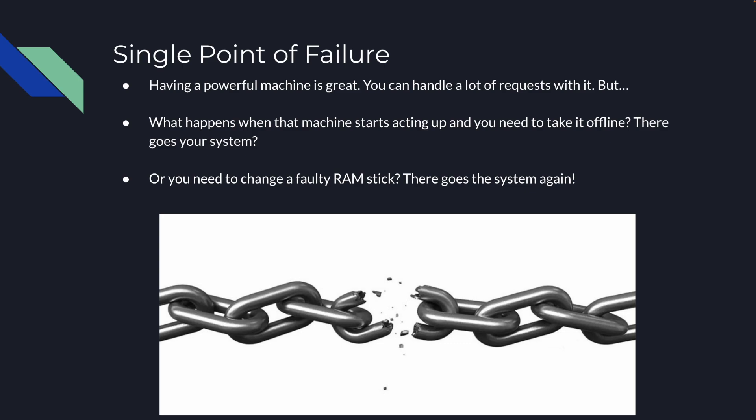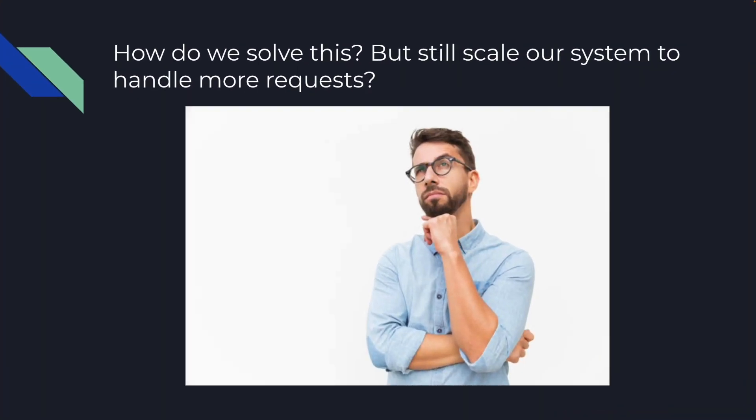Another issue with vertical scaling is that you have a single point of failure. Having a really powerful machine is great — you can handle a lot of requests with it — but what happens when that machine starts acting up and you need to take it offline? There goes your entire system. Or you need to change a faulty RAM stick — you just lost the system again. Your one machine going down will bring your entire system down and you can't serve any requests.